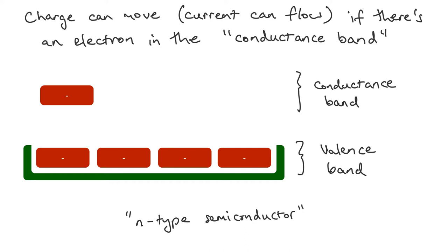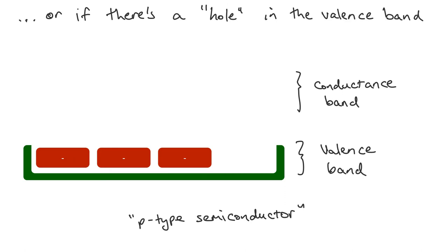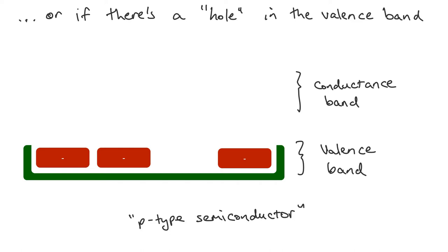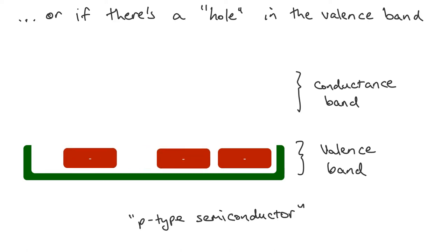Now let's go to the case where we've got one fewer tile. Here we don't have anything in the conductance band, but we've got a hole in the tray. I'm going to call the tray the valence band. So we've got a hole in the valence band, and now the electrons can move. This is called a p-type semiconductor because if electrons have a negative charge, then you can imagine that the hole has a positive charge. Holes — the absence of an electron — have a positive charge. And so that is a p-type semiconductor because holes have a positive charge.